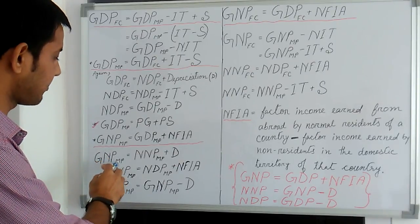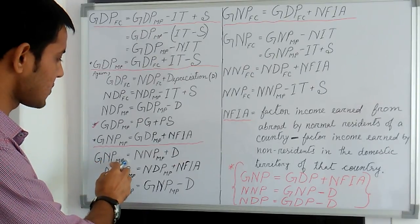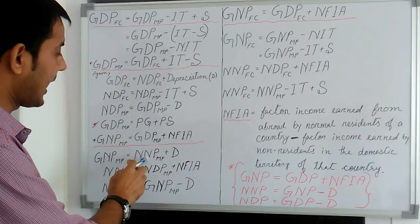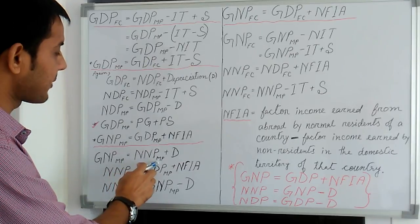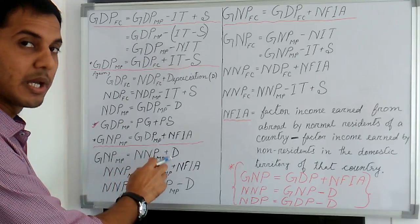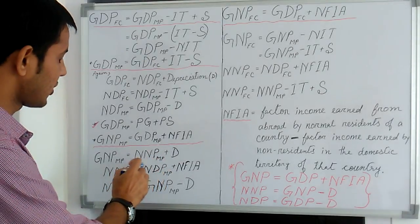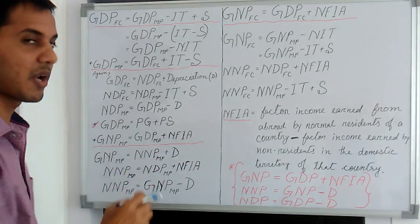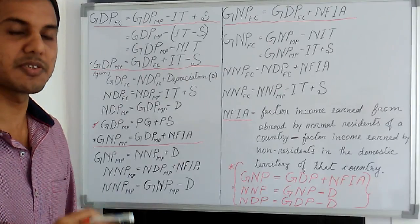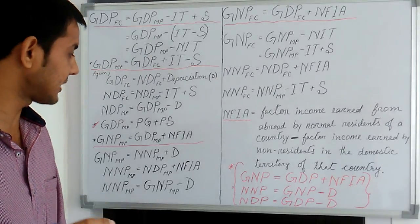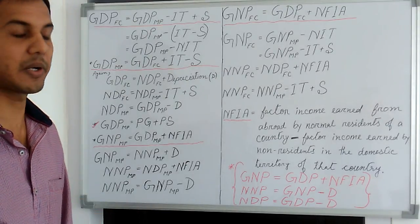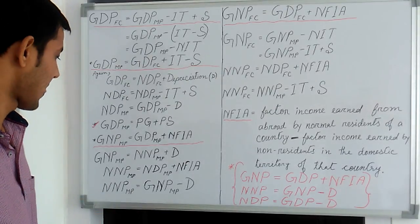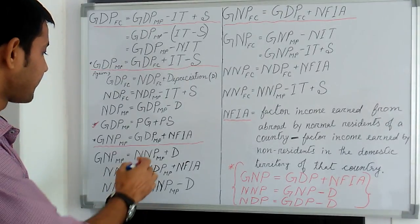GNP at market price, gross national product at market price, equals NNP at market price plus depreciation. NNP at market price denotes net national product at market price.